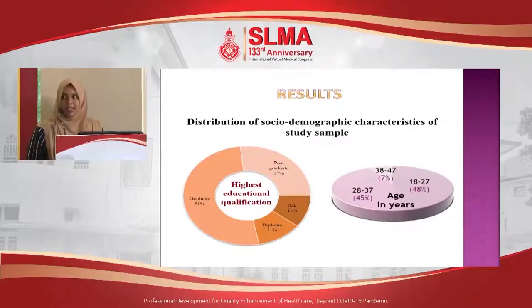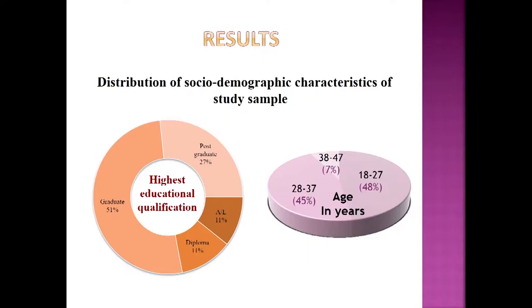Moving on to the results, this is the distribution of socio-demographic characteristics of our study sample. This is a highly educated sample where about 80% were educated up to degree level or more. The age range was 18 to 48 years and the mean age was 28 years.